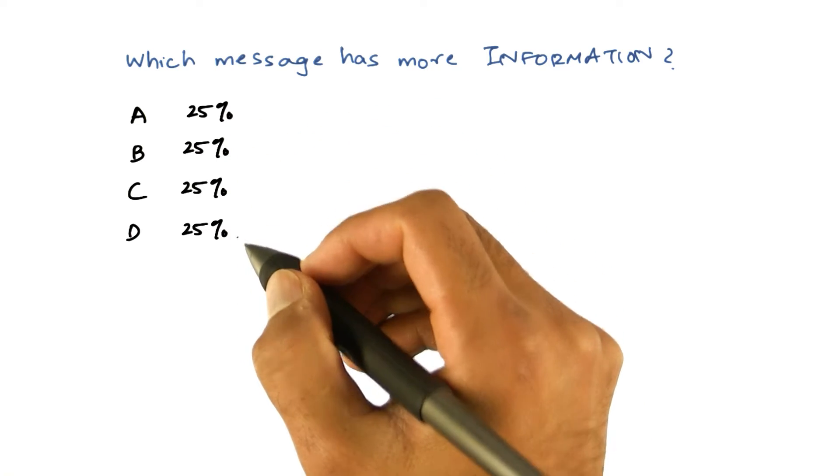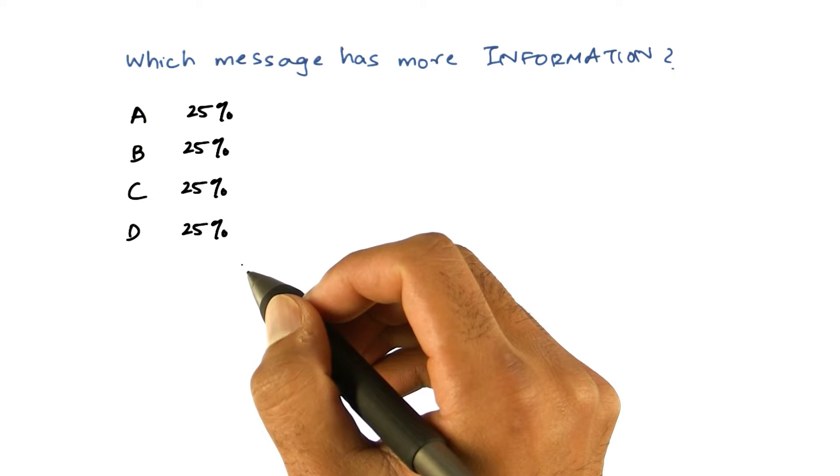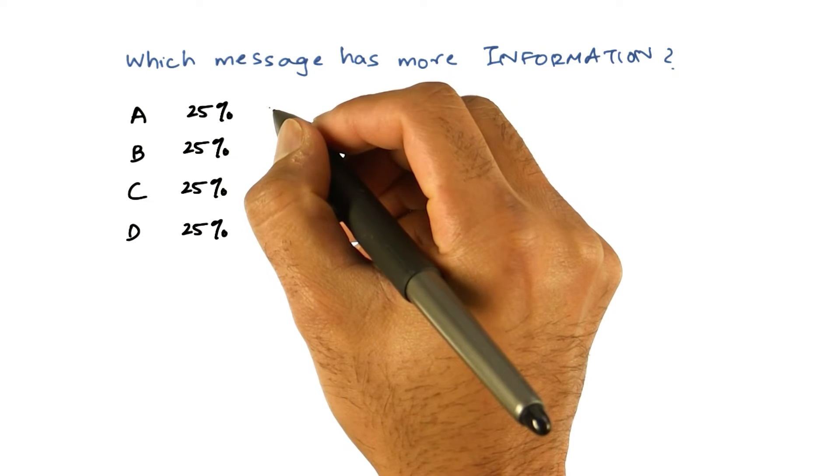So you can represent A, B, C, and D in binary with two bits each, like so.